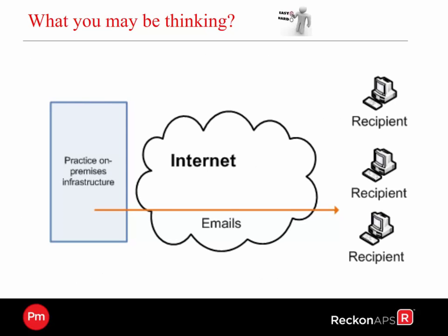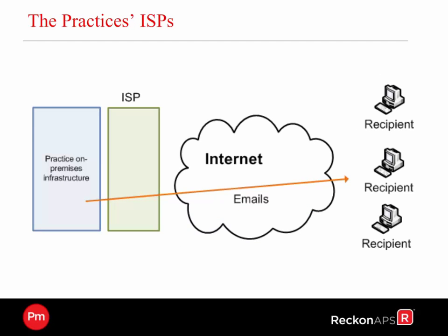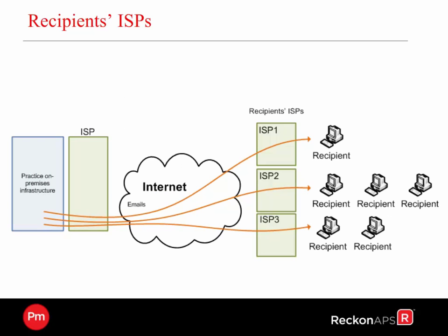You might be thinking that sending outgoing emails should be easy. We have our practice on-premise infrastructure, we connect to the internet and send that information to the clients. What happens in reality is a little bit more difficult. Your practice on-premise infrastructure firstly connects through to an internet service provider, your ISP then connects through to the internet, and your recipients and clients have an internet service provider on the other end. So the traffic goes through a number of areas — this makes some things more difficult.